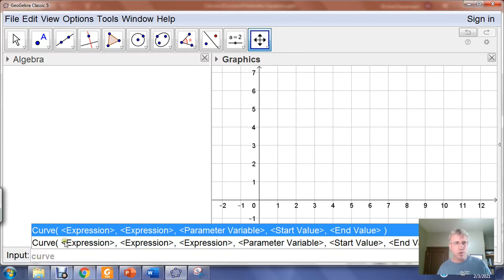This first one says expression, expression, parameter variable, start value, end value. This is for a two-dimensional space curve where the first expression is the X position, the second expression is the Y position. The parameter value in our case will be T for time, the variable name we're using to parameterize the motion. And then the start and end value will be the beginning and end of the time interval of flight.